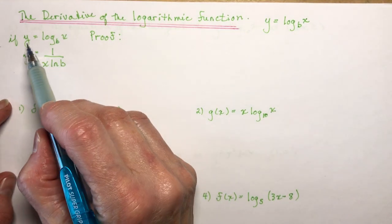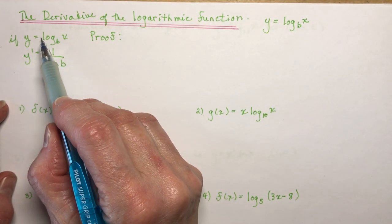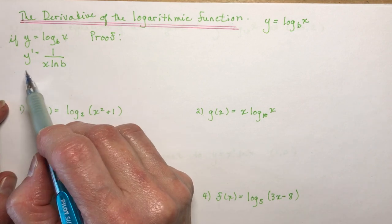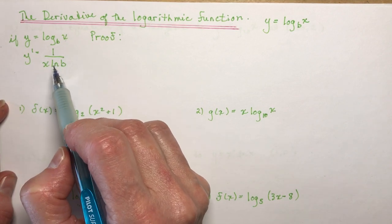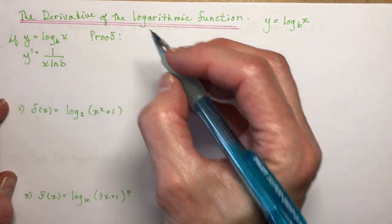So let's look at the proof. The rule is that if y is equal to log base b of x, then y prime is 1 over x·ln b. So let's prove that.